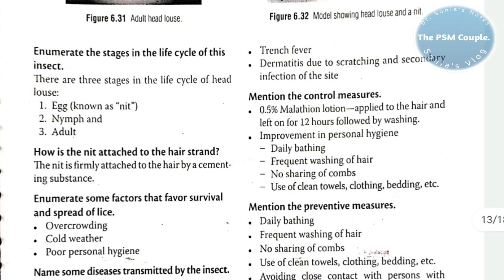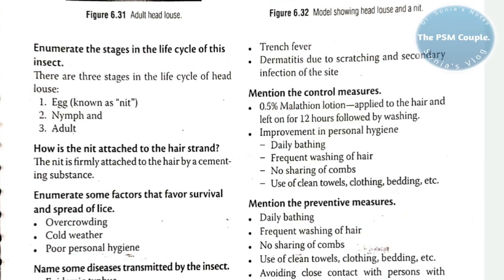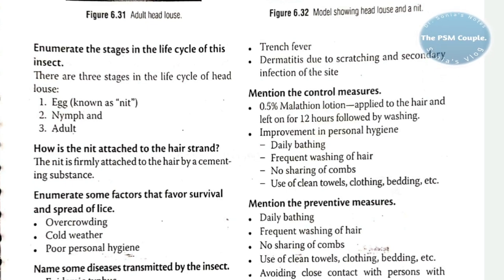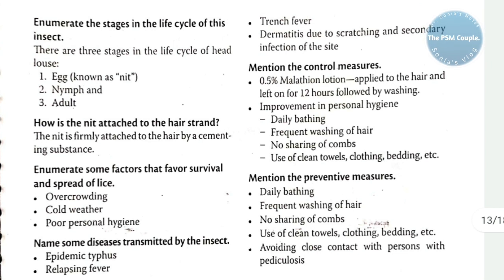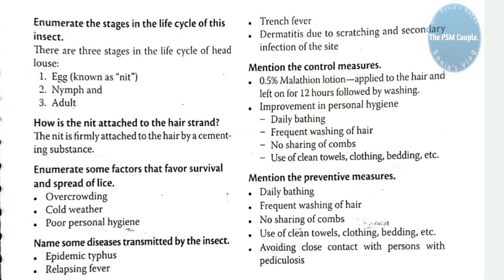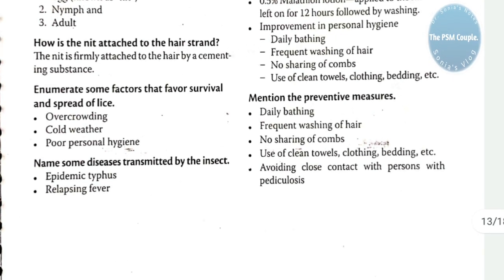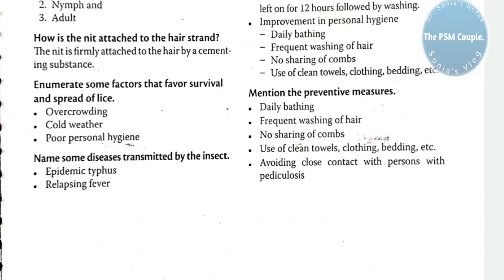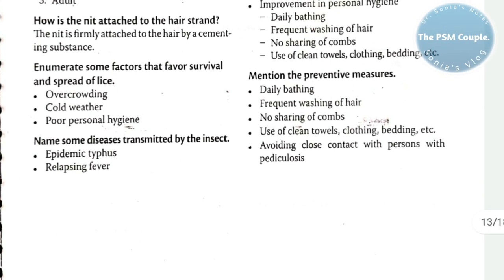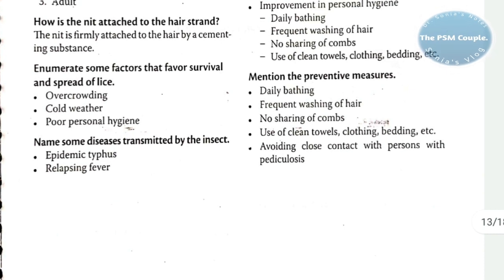Control measures: 0.5% malathion lotion is applied to the hair and left on for 12 hours, followed by washing — the lotion can be applied at night and washed off in the morning. Preventive measures include daily bathing, frequent washing of hair, no sharing of combs, and use of clean towels, clothing, and bedding.